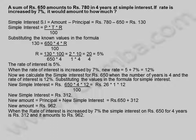When the rate of interest is increased by 7%, the simple interest on 650 rupees for 4 years is 312 rupees and it amounts to 962 rupees.